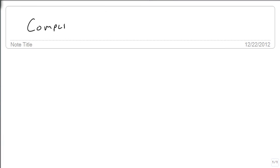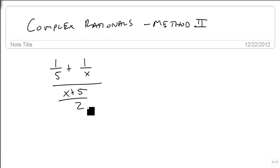We're now going to simplify complex rationals with a different method, which the book calls Method 2. I'm going to call it the LCD method. And so we're going to start with the problem 1 over 5 plus 1 over x, all over x plus 5 over 2.